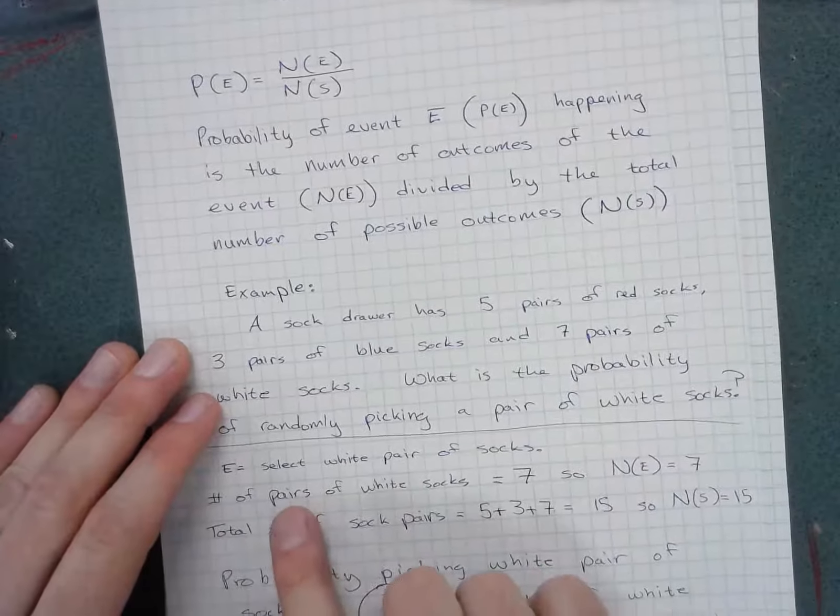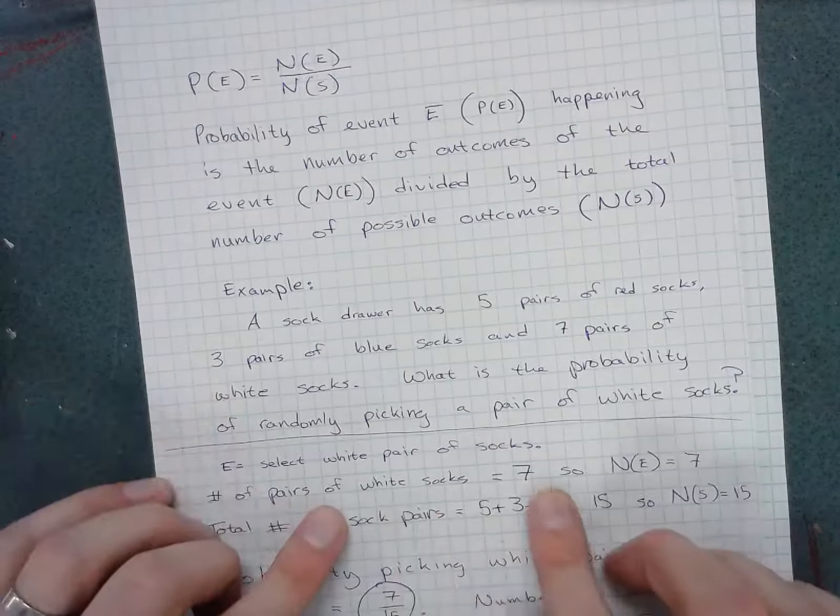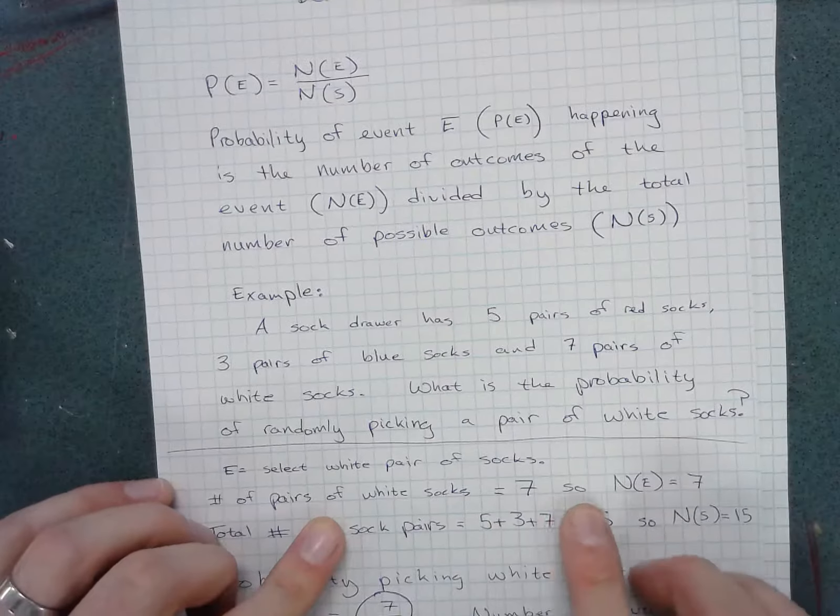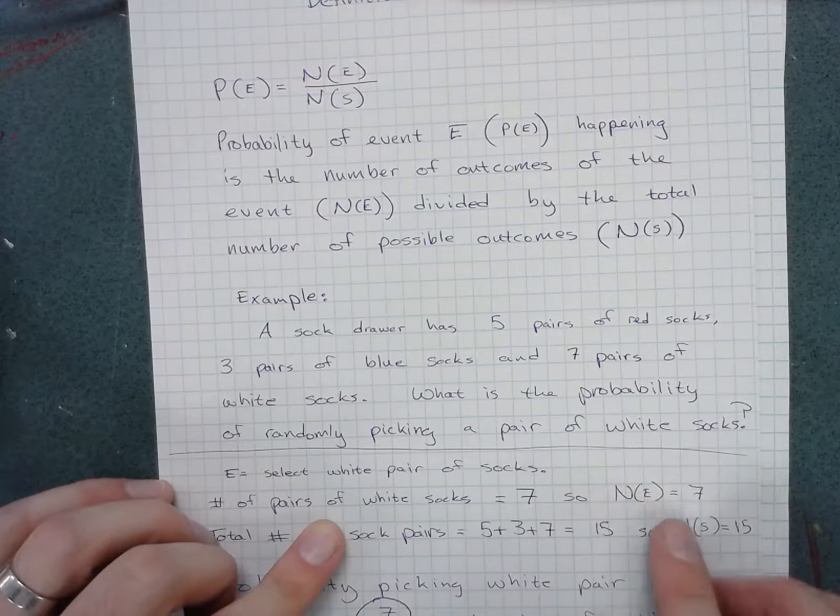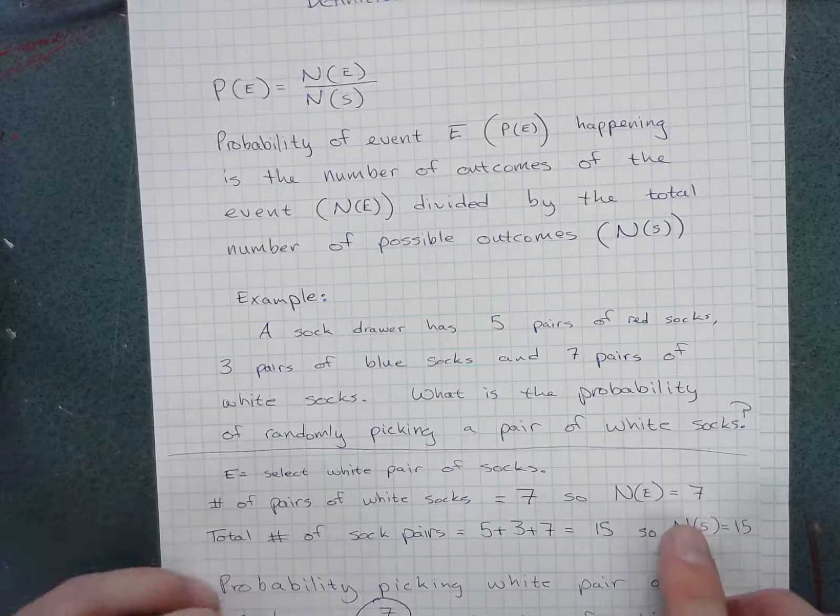The number of pairs of white socks is seven. N of E just stands for the number of things in the event. So there are seven pairs of white socks.